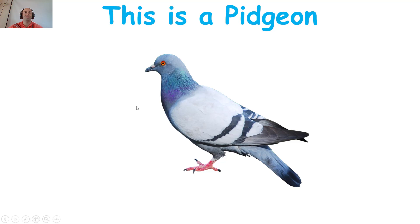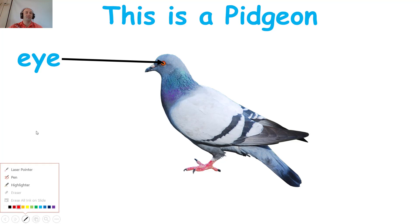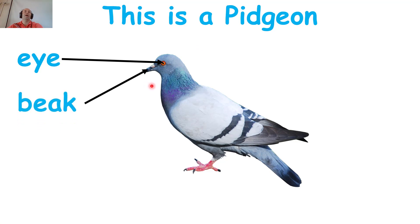Let's start up here. We will start with an eye, or two eyes. A pigeon has two eyes. Next is a beak. This is the beak of the pigeon. And many birds have a beak. So a pigeon has two eyes and a beak.